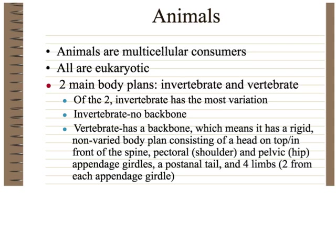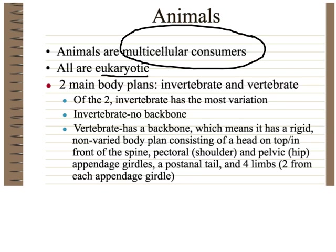The first thing is: what is an animal? The definition is that animals are multicellular consumers. They are also eukaryotic, which should go without saying — all of the protists, fungi, plants, and animals are eukaryotic, not prokaryotic.